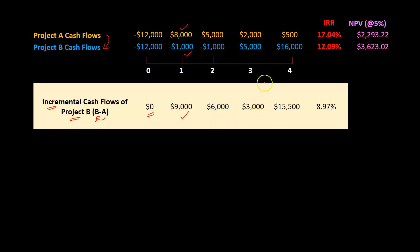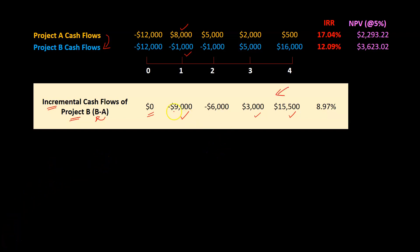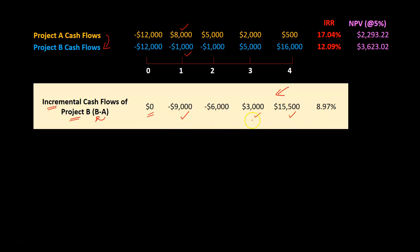In year three, project B is the better project because you gain $3,000. Then in year four, you gain $15,500 as you go from A to B. The question is: is this a worthwhile move? One way to reflect on that is by calculating the internal rate of return of these incremental cash flows.